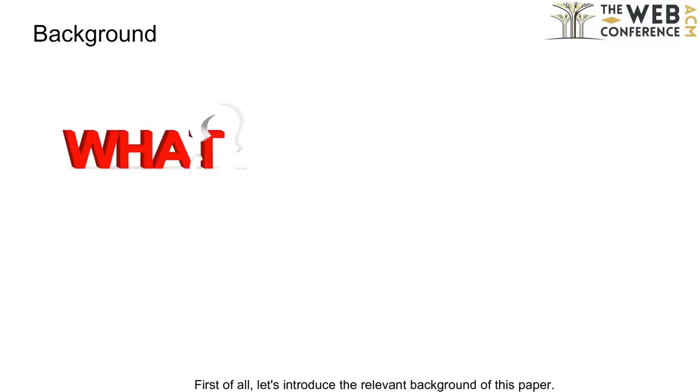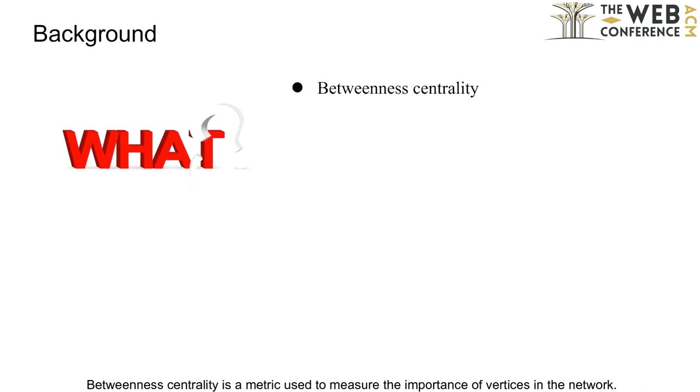First of all, let's introduce the relevant background of this paper. What is betweenness centrality? Betweenness centrality is a metric used to measure the importance of vertices in the network. It calculates the betweenness centrality value by counting the shortest path through the vertices.